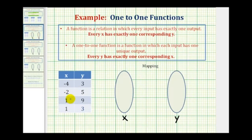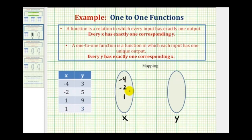To map this relation, we're going to place the set of x values or inputs here, and the set of y values or outputs here, and then map the relation. So looking at the x values, we have three unique x values: negative four, negative two, and positive one. Even though one occurs twice, we only list it once. These are the unique x values. And then for the y values, we have three, five, and nine.